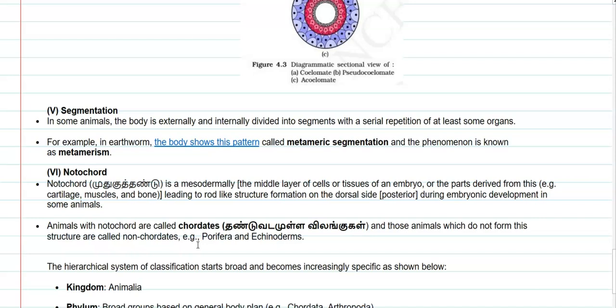The last point taken into consideration for classification is the notochord. The notochord is a mesodermally derived structure — derived from the middle layer of cells or tissues of an embryo, from parts derived from cartilage, muscles, or bone cells. This mesodermally derived cell leads to the formation of a rod-like structure on the dorsal side during embryonic development. Animals with a notochord are referred to as chordates, whereas those animals that do not form this structure in their entire life cycle are referred to as non-chordates — for example, members of Porifera as well as Echinoderms.